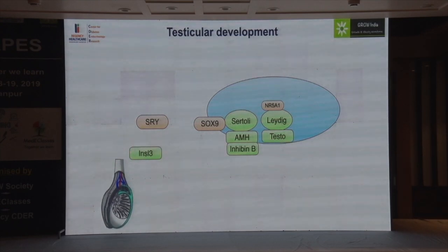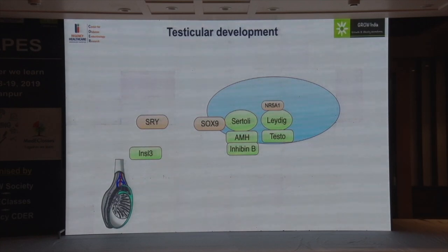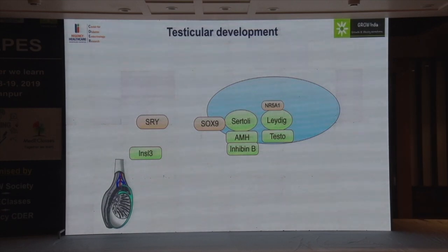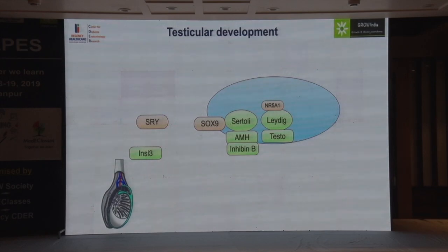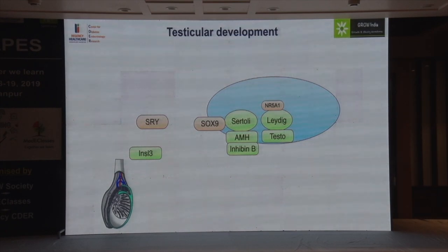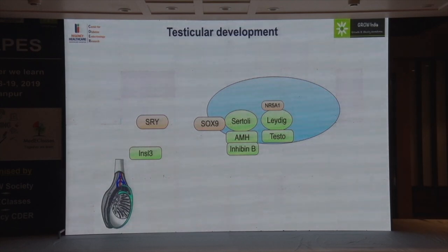INSL3 acts on the testis and causes testicular descent. Testicular descent has two parts: descent from the abdomen to the inguinal region, and from the inguinal region to the scrotal position. The abdominal phase is regulated by INSL3; the inguino-scrotal descent is regulated by testosterone. If the gonad is non-functional, the testis will remain in the abdomen. If there is a selective problem in testosterone production or action, it will be in the inguinal region. So the location of the gonad in an XY person tells you what problem you are dealing with.